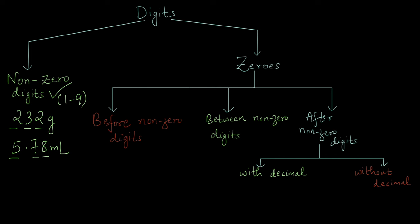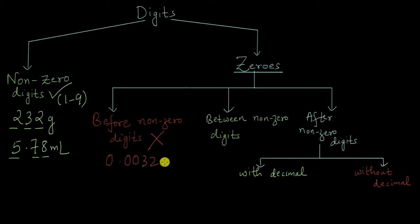What is left is zeros. Zeros can be before non-zero digits, between non-zero digits, or after non-zero digits. When zeros are before non-zero digits, we can safely say they are not significant. For example, in a number like 0.0032 kg, there are only 2 significant digits — this 3 and this 2 — because those are non-zero digits. All the zeros before them are not significant.